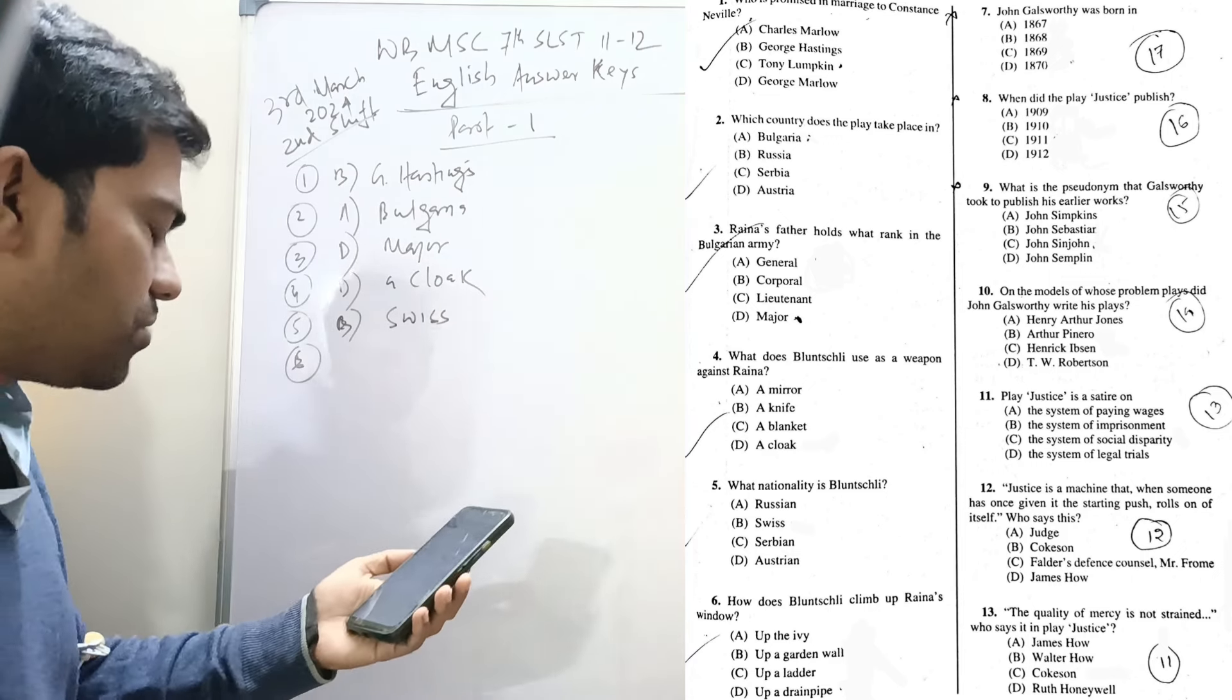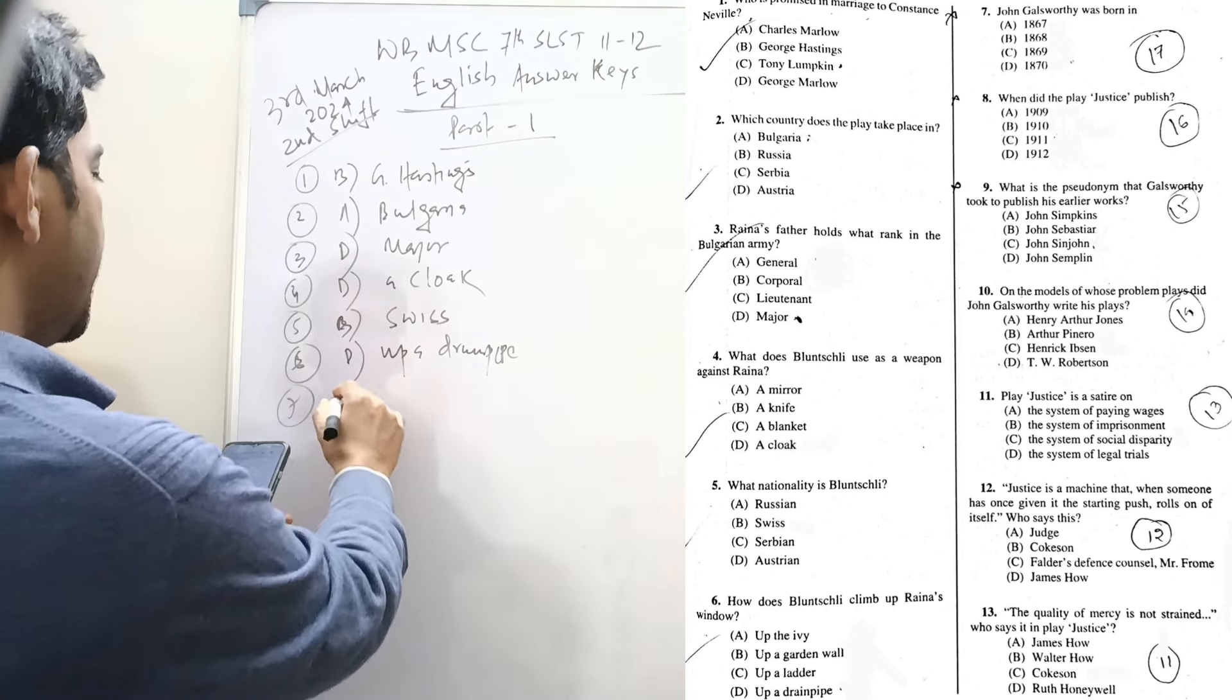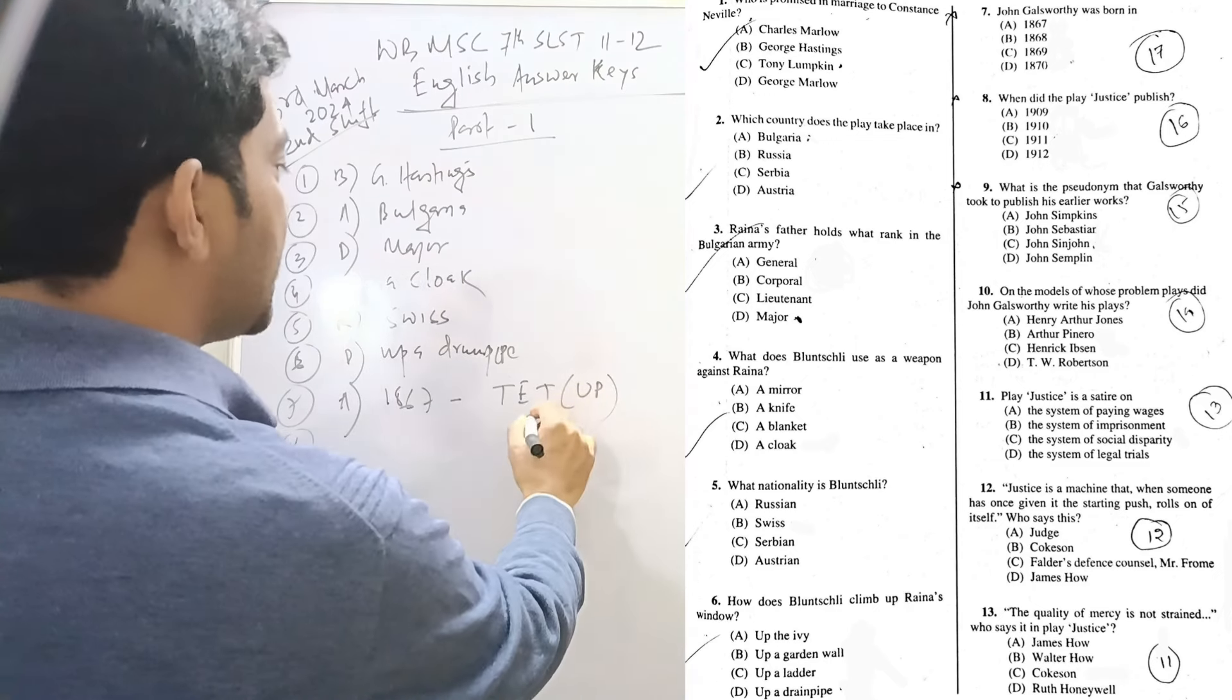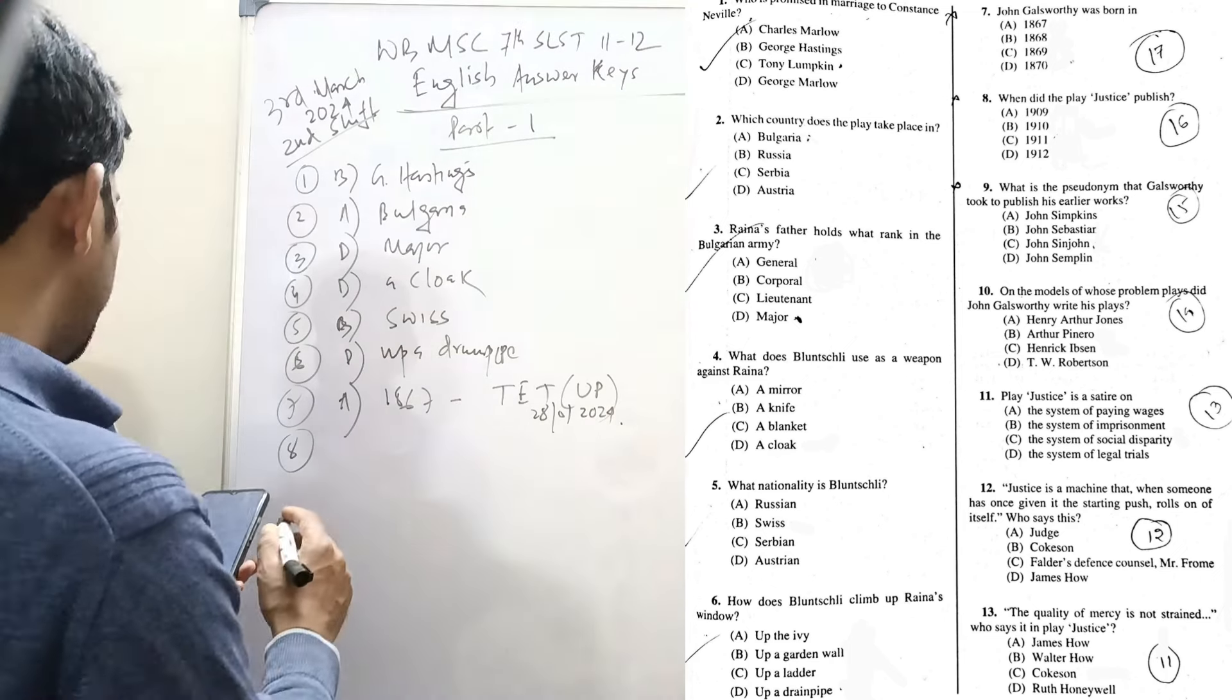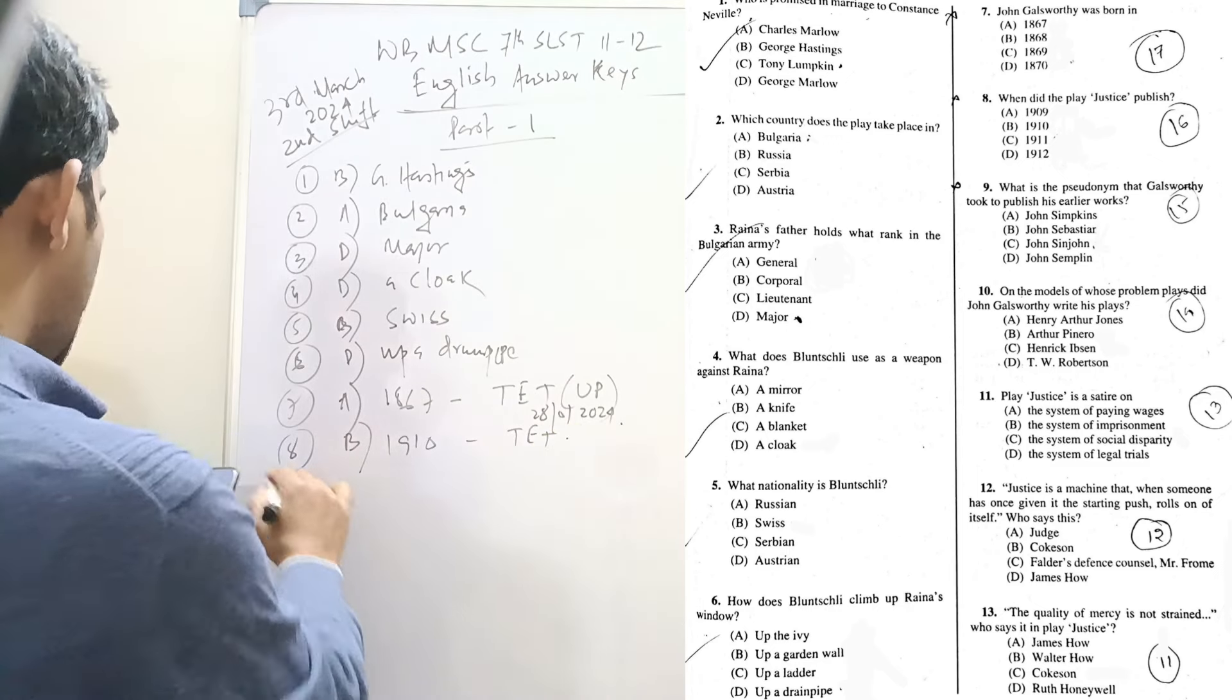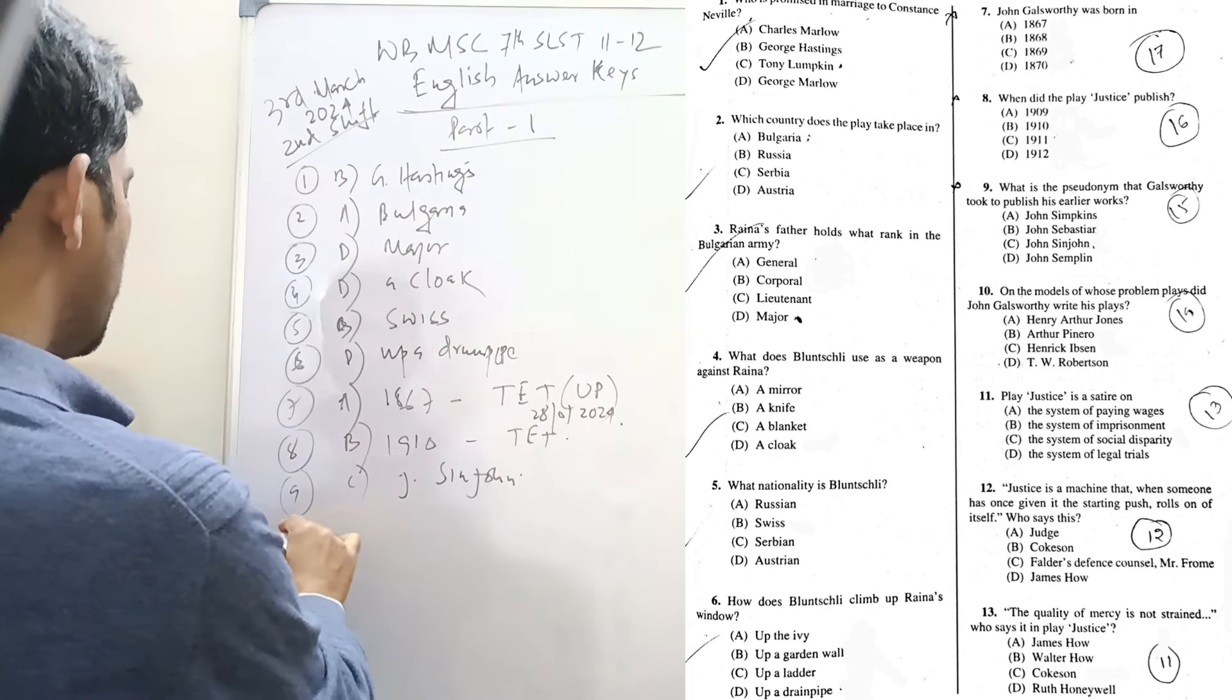Six: How does Bluntschli climb up Raina's window? Up a drain pipe, D. Seven: John Galsworthy was born in 1867. Eight: It is a question that was in TET 28th January 2024, the question is repeated here. When did the play Justice publish? 1910. Nine: What is the pseudonym that Galsworthy took to publish his earlier work? John Sinjohn. It is a very common question, John Sinjohn is a pseudonym of John Galsworthy.